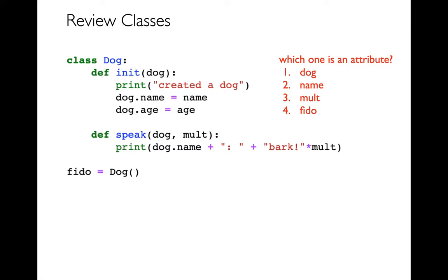So this was the first snippet of code that we are starting with in that review doc, which you've already answered these questions. And so the first question: which one of these things was an attribute? Dog, name, mult, Fido. And the answer is that I guess I see two attributes here. I have a dog.name and a dog.age. So either name or age would be a fine answer. And I guess name is only one of the list, so name is an attribute.